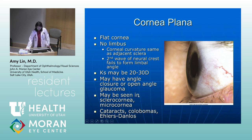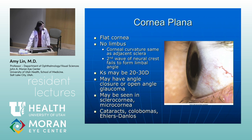Cornea plana is a very unusual condition — a very flat cornea where there's no clearly defined limbus. The corneal curvature is about the same as the adjacent sclera, and this condition occurs when the second wave of neural crest migration fails to form the limbal angle. The Ks may be 20 to 30 diopters — normal keratometry values are about 42 to 45, so this is very, very flat. Patients may have angle closure glaucoma or open angle glaucoma, and it's seen with other anomalies such as sclerocornea, microcornea, associated cataracts, colobomas, and Ehlers-Danlos syndrome.